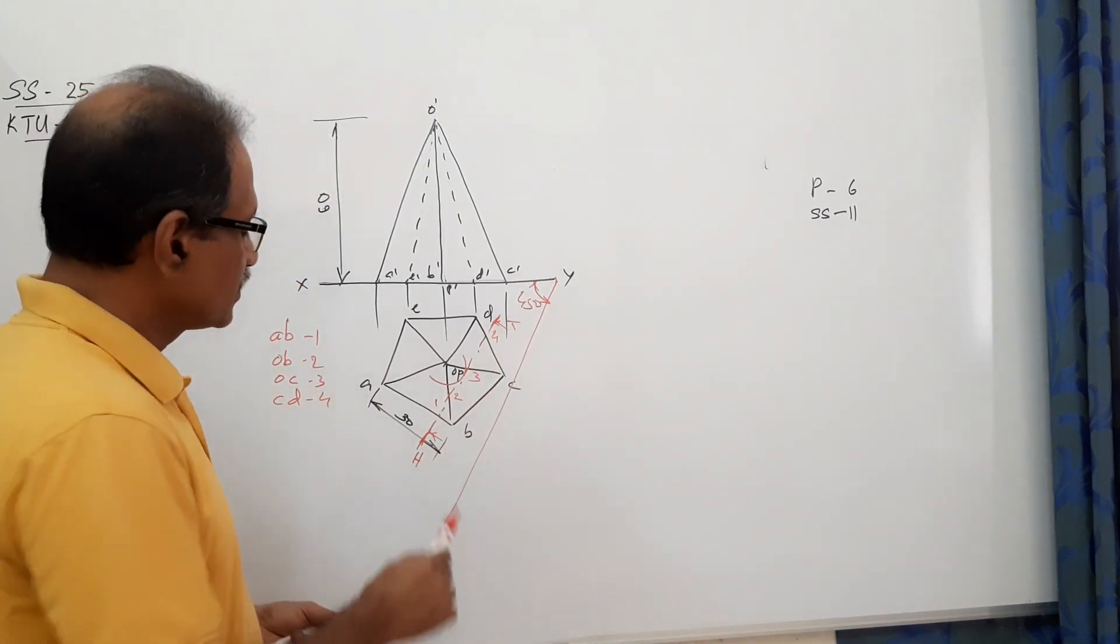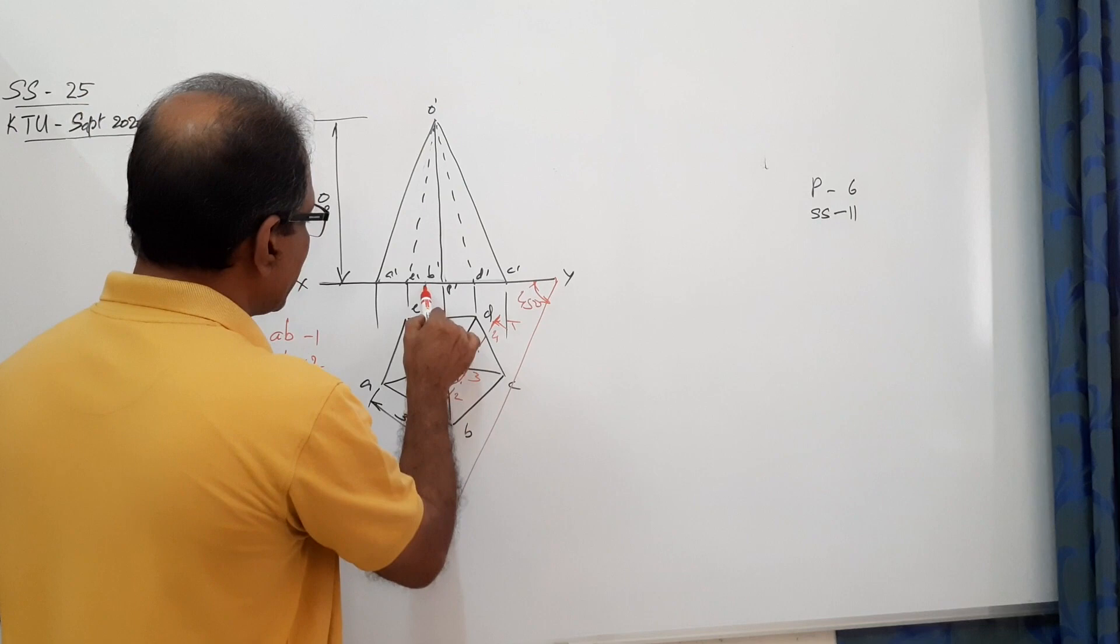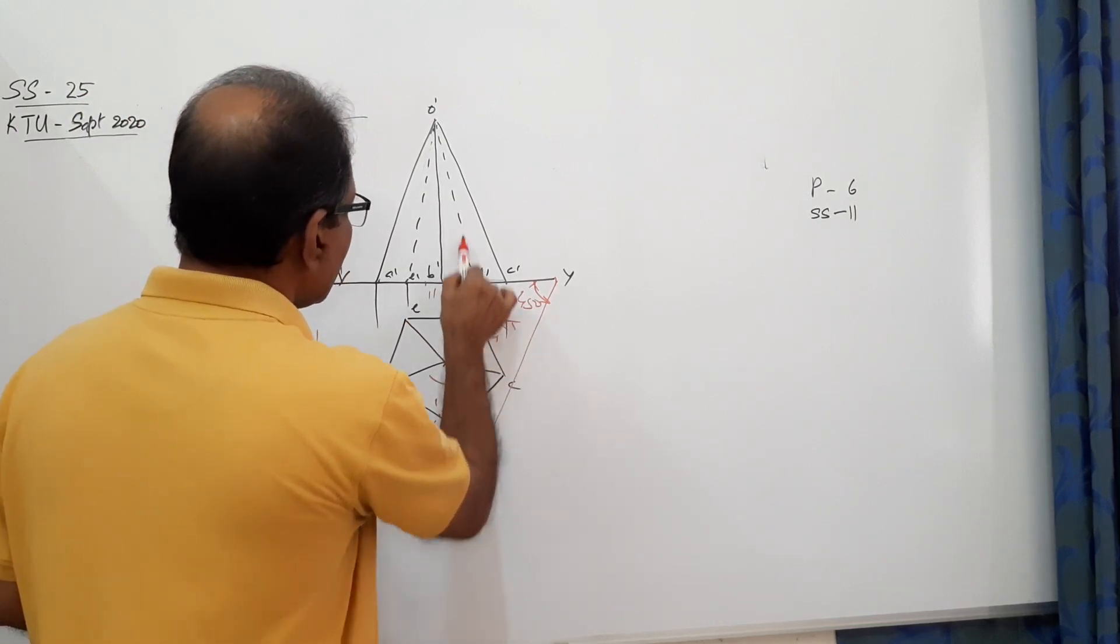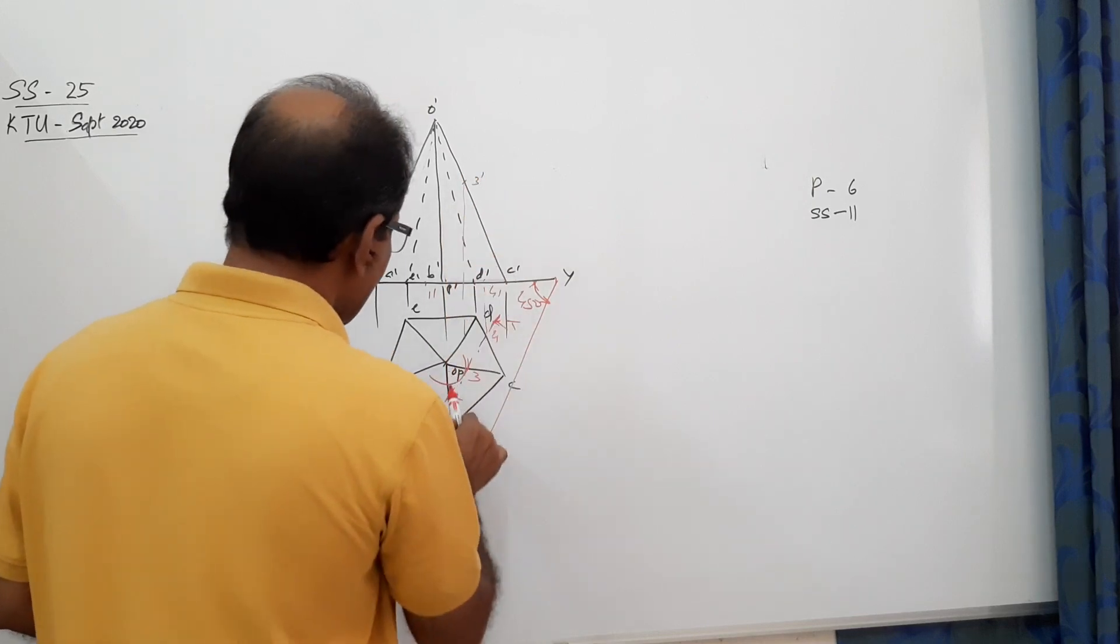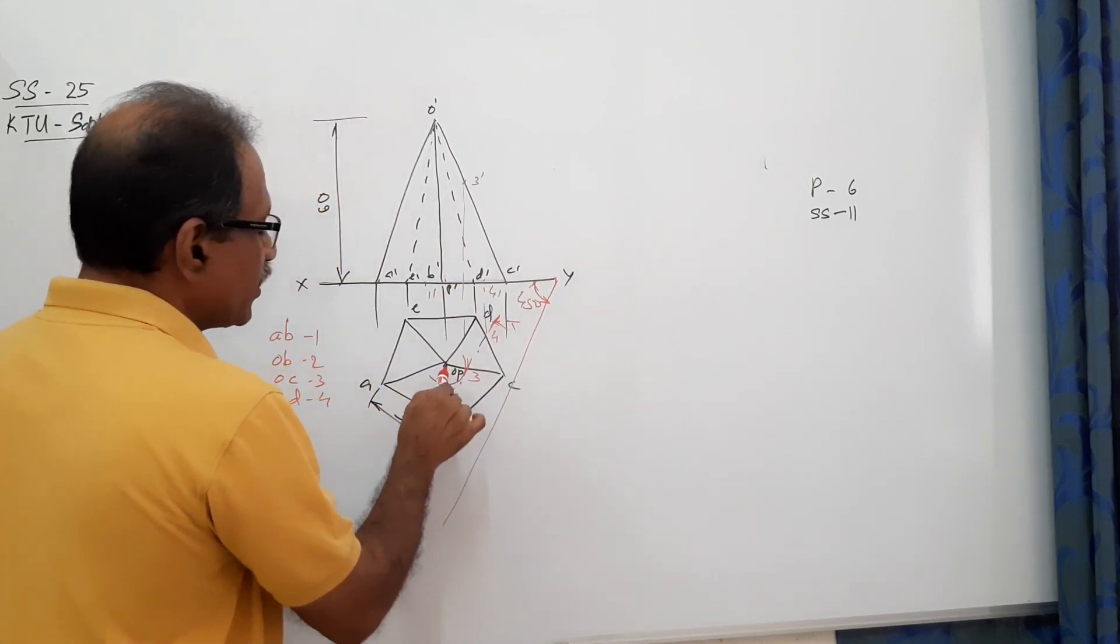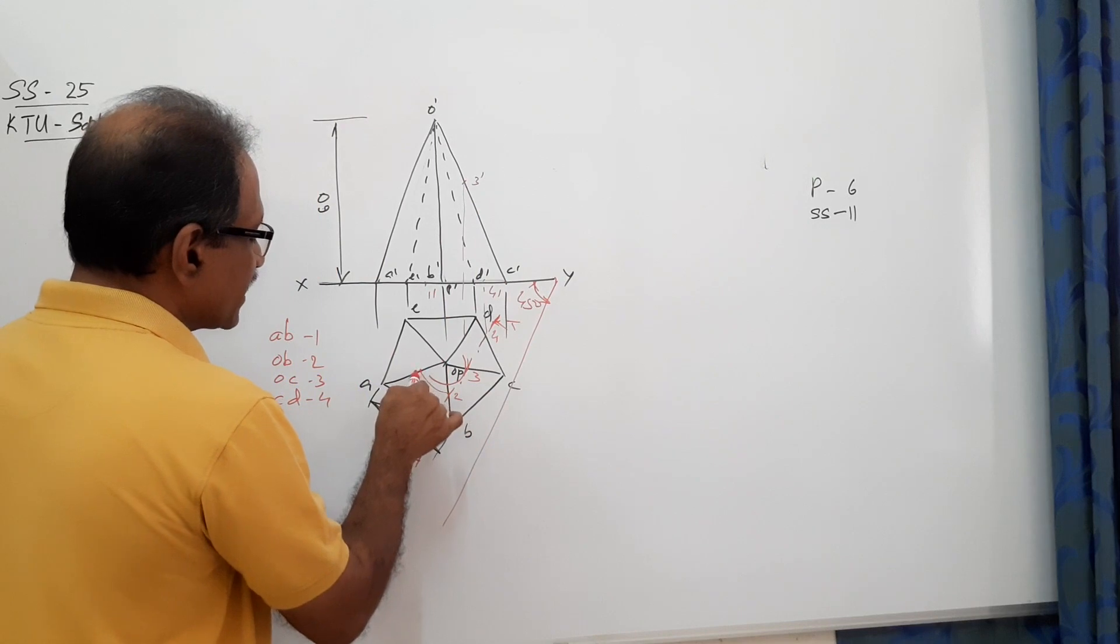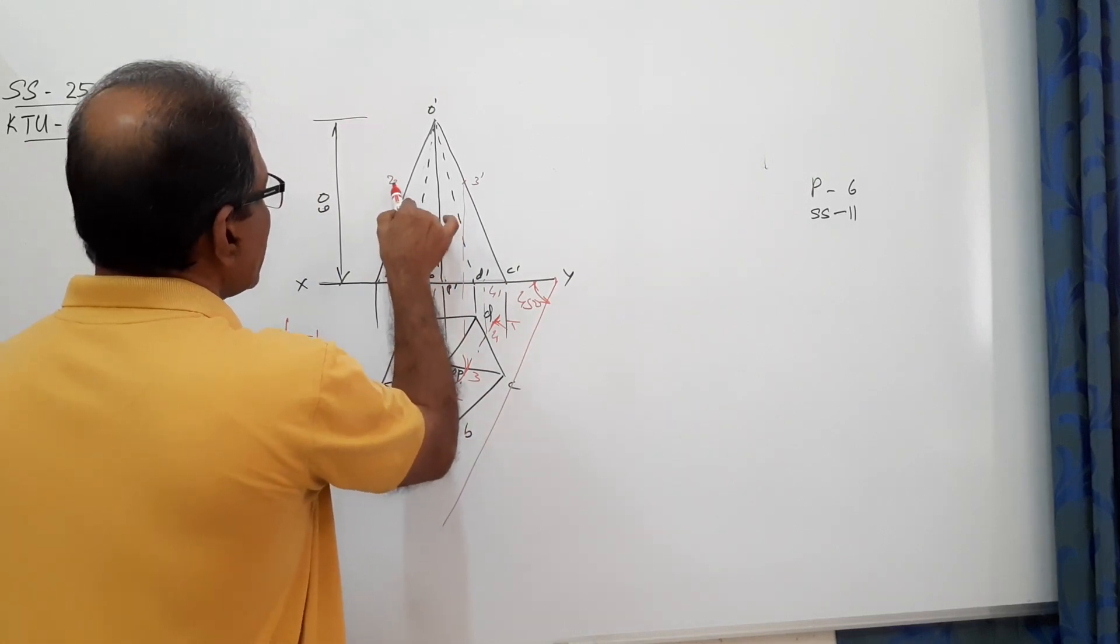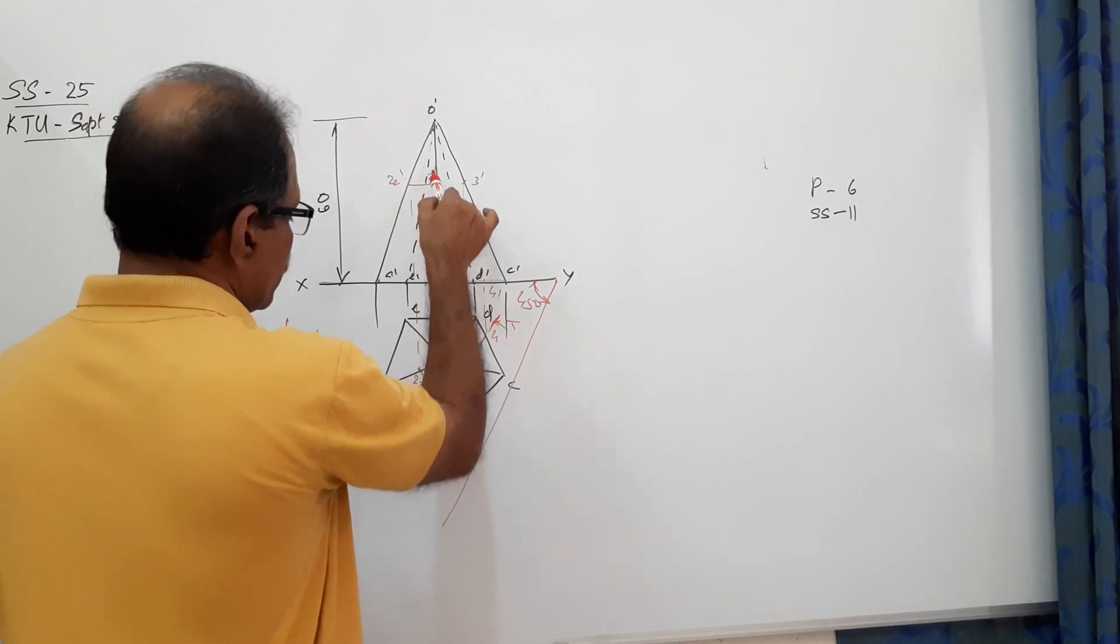Agreed? We can project it. We can project 1 to X-Y to get 1 dash. 4 to X-Y to get 4 dash. 3 to get 3 dash. And to get 2-1 you do, O as center, O-2 as radius, cut an arc, you get 2-2. Project it. 2-2 dash. Draw horizontal line, you get 2 dash.